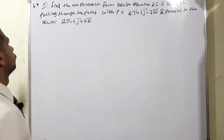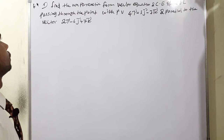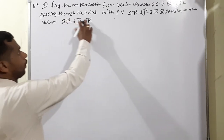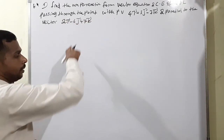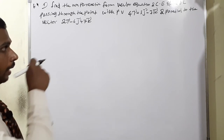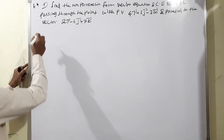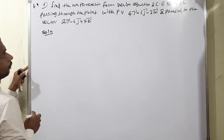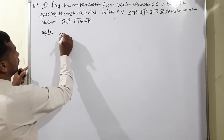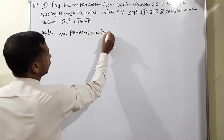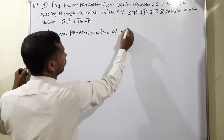Moving to exercise 6.4, question number 1. Find the non-parametric form of the vector equation and the Cartesian equation of the straight line passing through a given point with a given parallel vector. This applies theorem 6.11 — one point and one parallel vector are given.